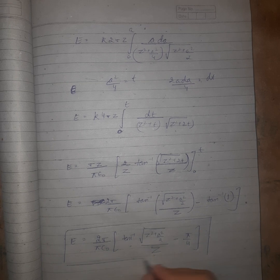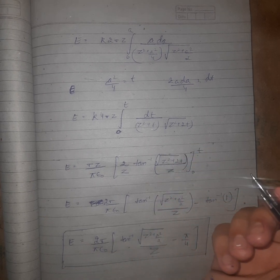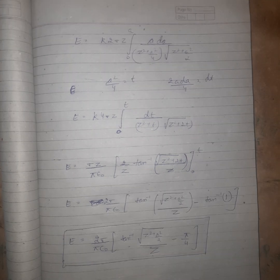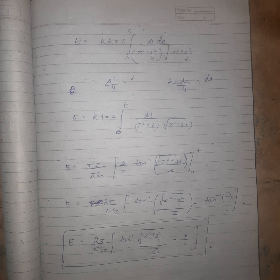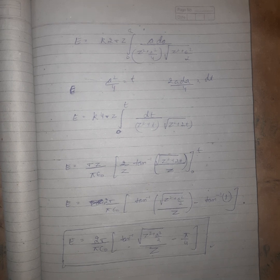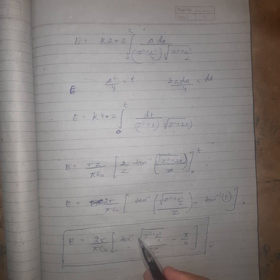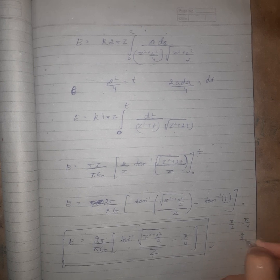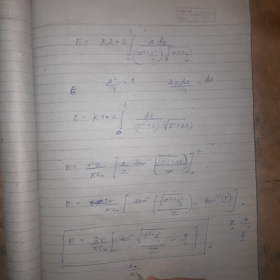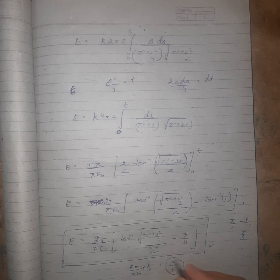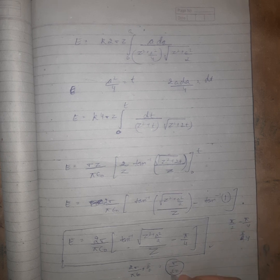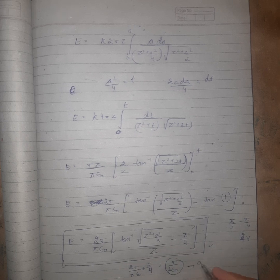Now checking limiting cases. If a tends to infinity, the tan⁻¹ term becomes tan⁻¹(∞) = π/2. So we get (2·sigma / (π·ε₀)) · (π/2 − π/4) = (2·sigma / (π·ε₀)) · (π/4) = sigma / (2·ε₀). So when a → ∞, E = sigma/(2·ε₀), which is the correct result for an infinite plane of surface charge.